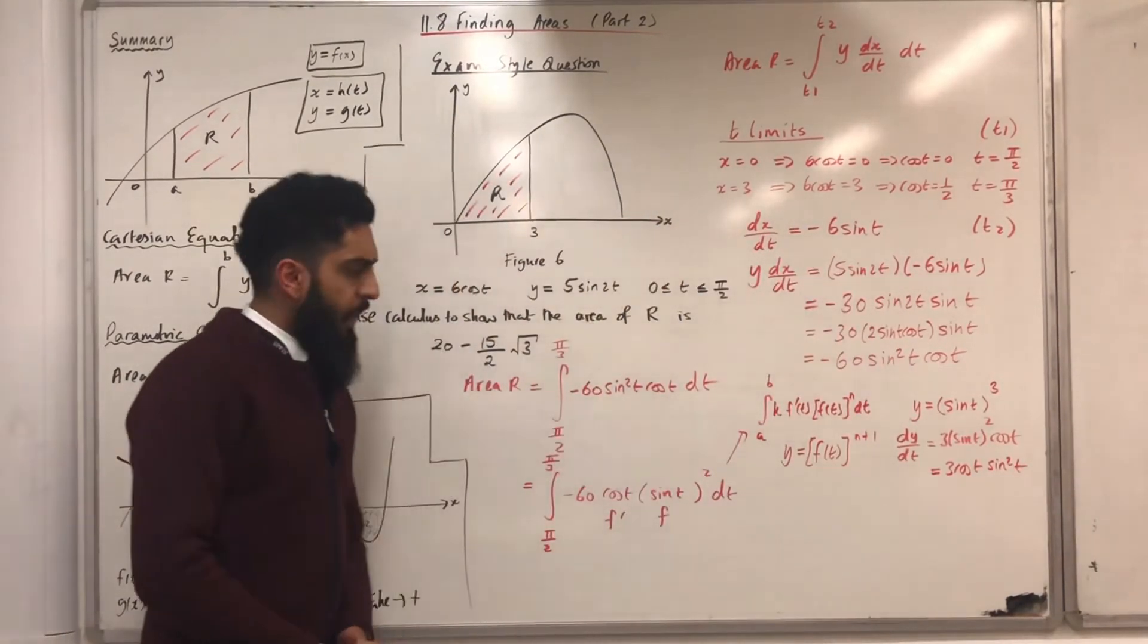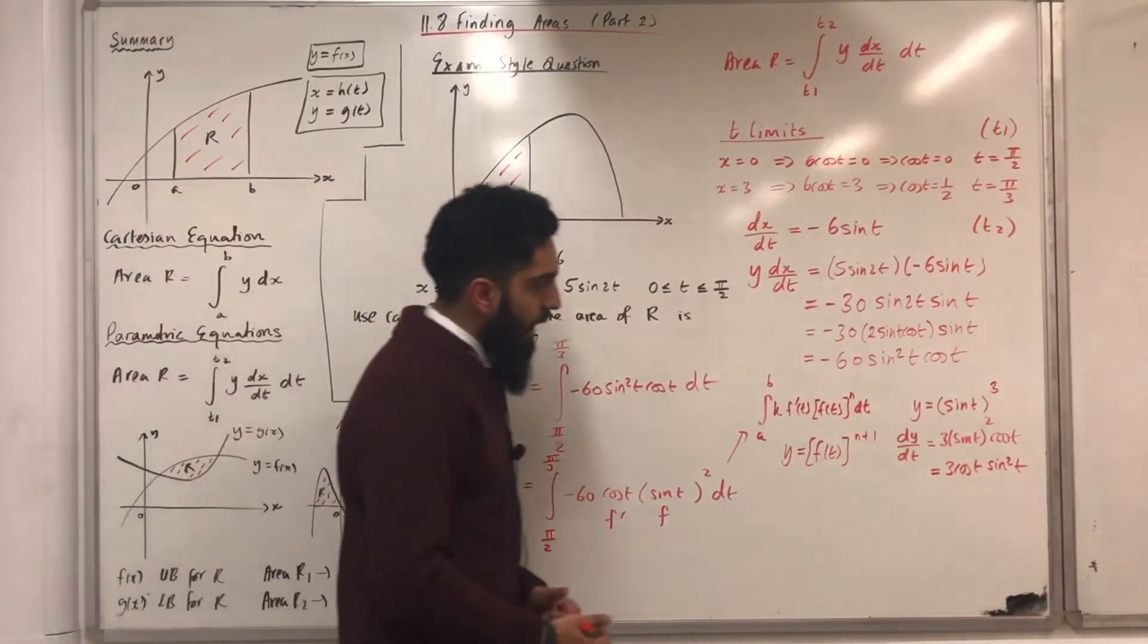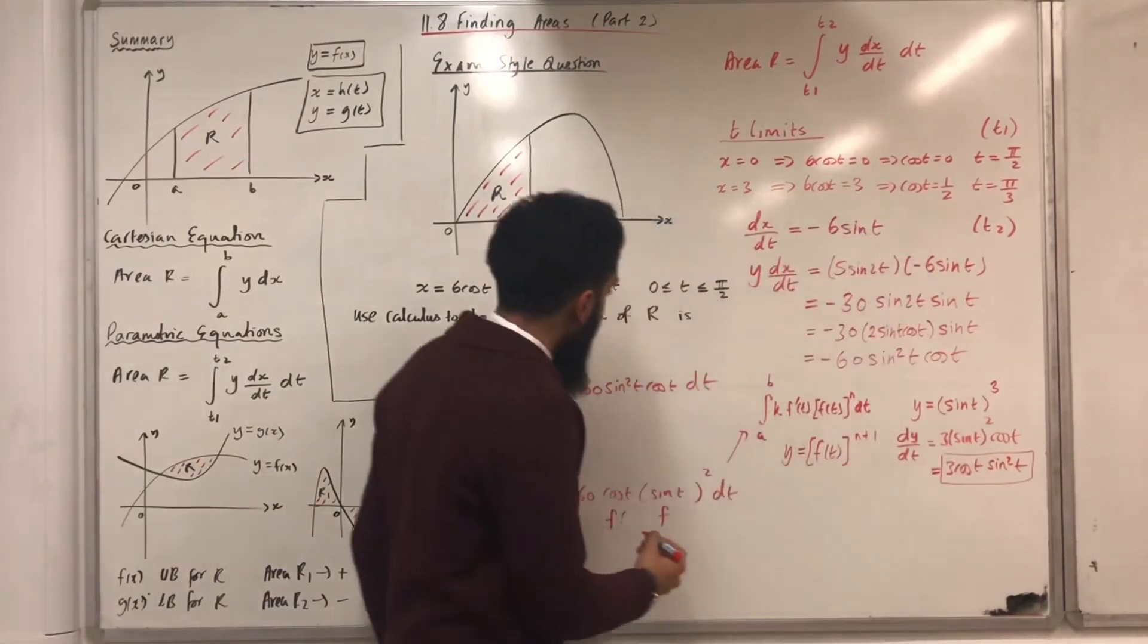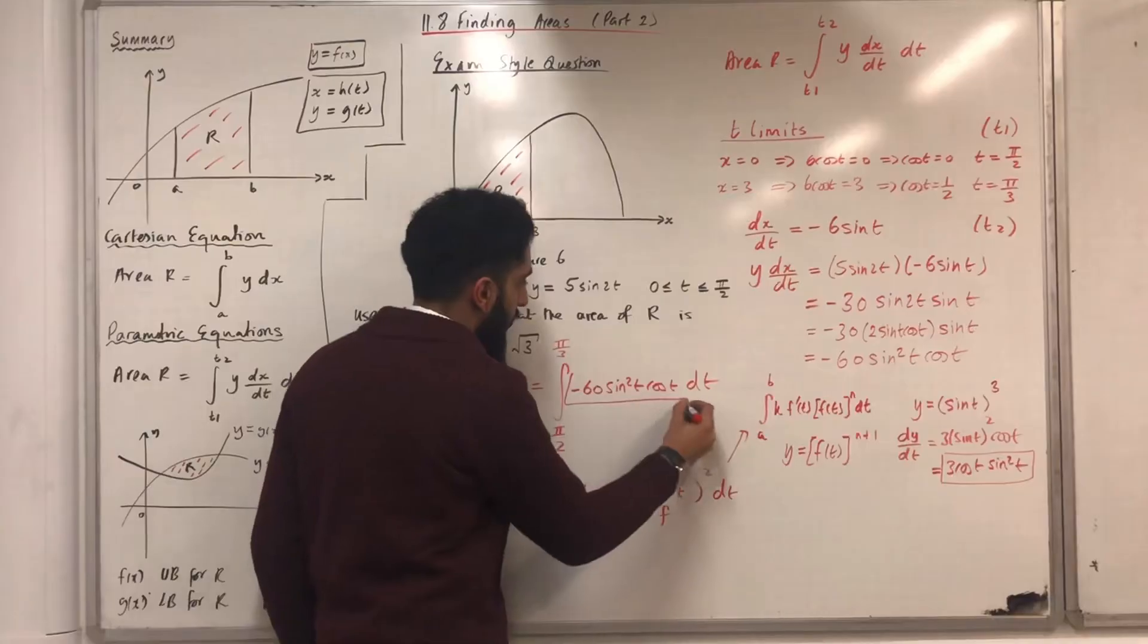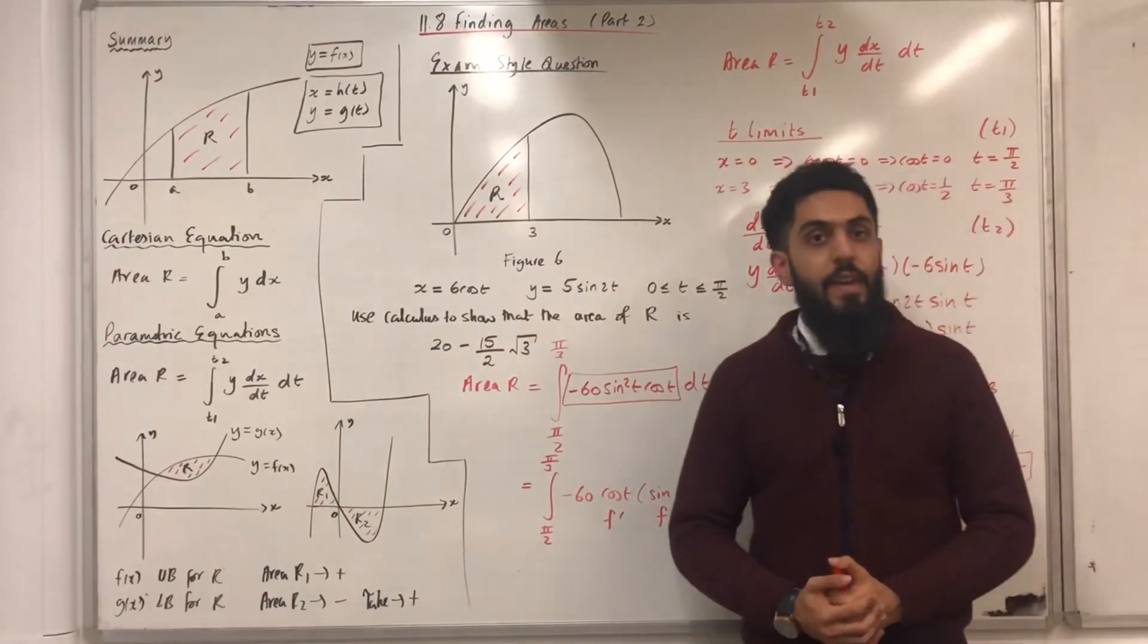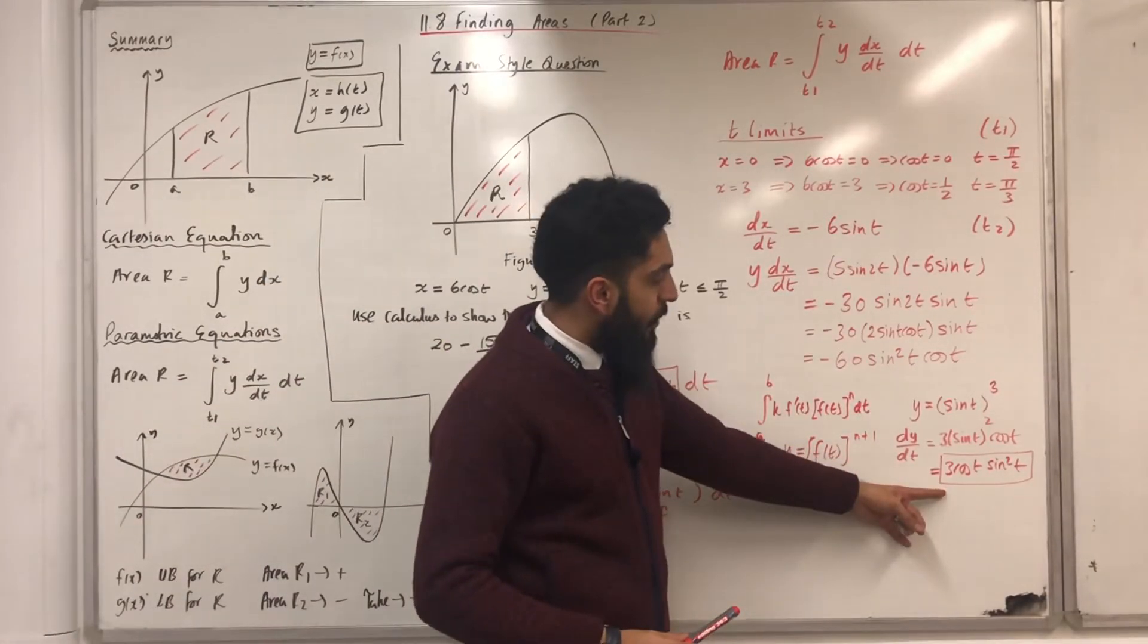Okay. Now, what do I do next? Well, I can put a rectangle around this and a rectangle around this. Okay. Now, I'm going to carry out a quick observation, ladies and gents. Over here, I've got 3 cos t sine squared t. But over here, I've got minus 60 sine squared t cos t.